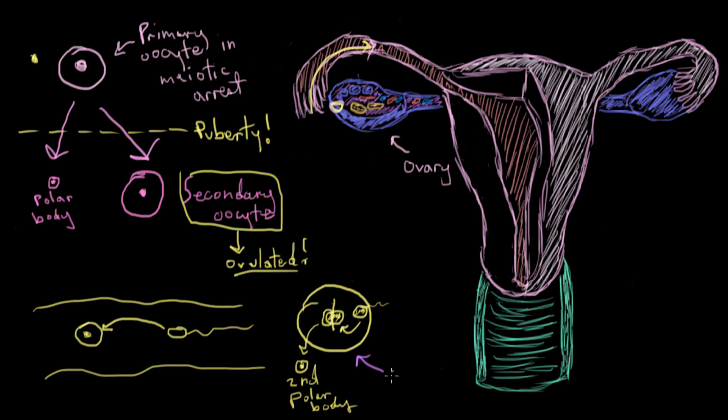And by the way, the egg has changed its name now from a secondary oocyte to an ovum. But it won't be an ovum for long. Once the sperm nucleus fuses with the egg nucleus, then it becomes a zygote.